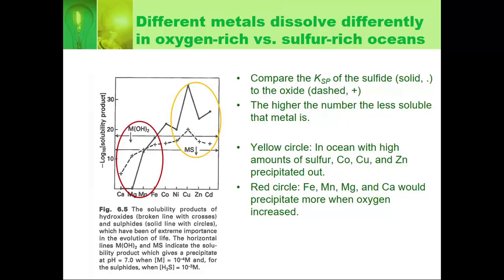And this is the yellow circle with high amounts of sulfur that keeps the cobalt, copper, and zinc especially out of the ocean. Especially the copper, and especially the stuff over here. The cobalt is actually closer to the middle. And the red circle, when oxygen increased, you would actually have these things precipitate more. And the big one here is iron will precipitate more when oxygen increases.